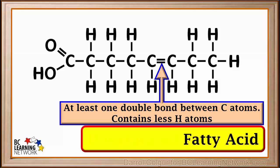Looking at another fatty acid, we see that this one has a double bond between two of the carbon atoms in the chain. Because each carbon atom can only have a total of four bonds, there are less bonds available for hydrogen atoms.